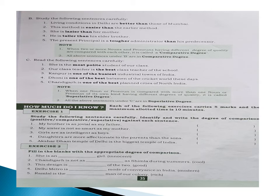See that — fill in the blanks with the appropriate degree of comparison. If it is positive degree, we'll use the base form. If comparative, we'll use the comparative form. If superlative, we'll use the superlative degree. First: 'an innocent girl' — here we'll use the base form 'innocent.' Then: 'Chandigarh is not as cool as Shimla during summer' — use base form 'cool' because it is positive degree.